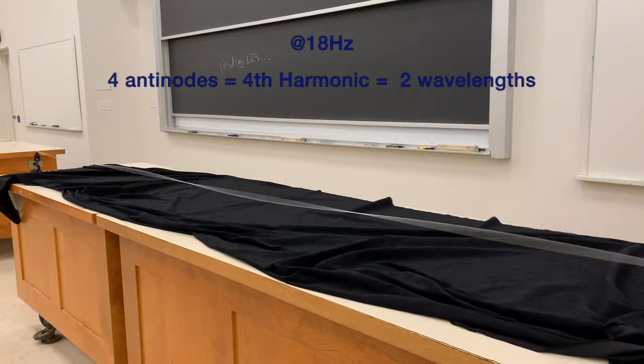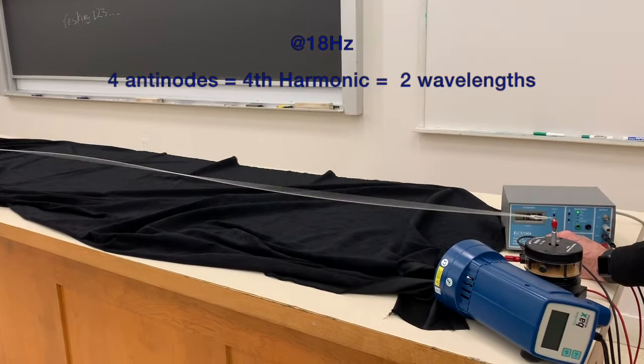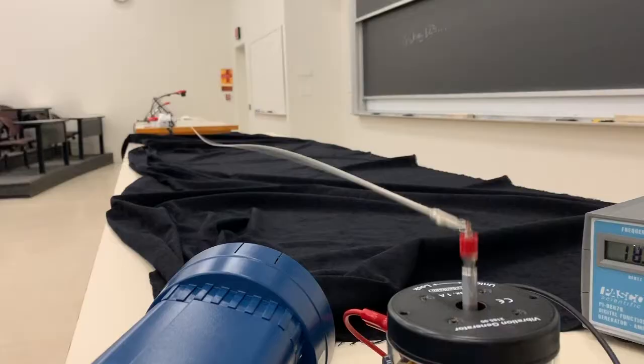Okay, check this out now. We're over in Wilder with this wave on a string, fixed end. Can you see the four anti-nodes? One, two, three, four, all the way down there, coming back to this wave generator that Ralph has his hand on.